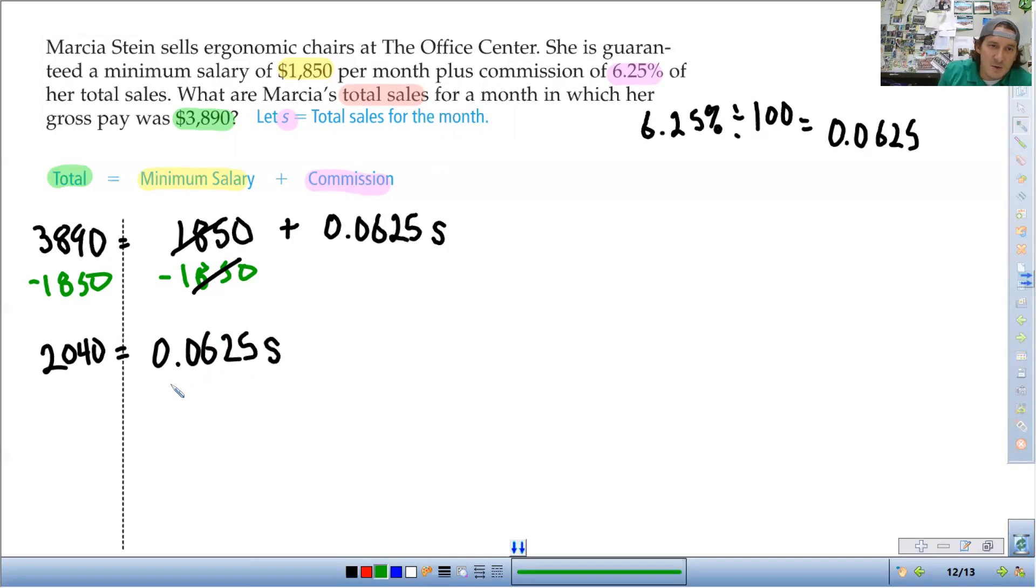That eliminates there, so we get 0.0625 times S. Since that is multiplication, to eliminate the 0.0625, I need to divide by both sides. So this eliminates, and I divide. So total sales for the year, or for the pay period, was $32,640.